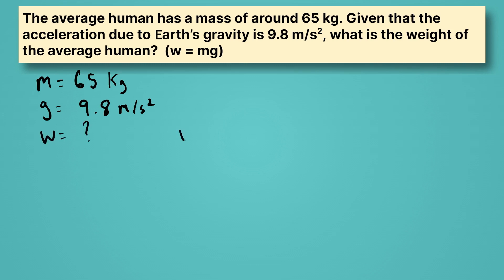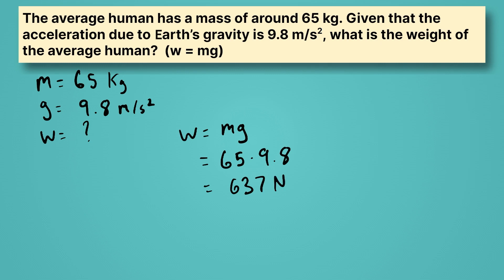Weight equals mass times gravity: 65 times 9.8 gives us 637. The units here are Newtons, since kilograms times meters per second squared always gives Newtons. Rounding to two sig figs — our acceleration and mass each have two sig figs — we get 640 Newtons. That is the weight of the average person in Newtons; in just a second we'll look at what this is in pounds.